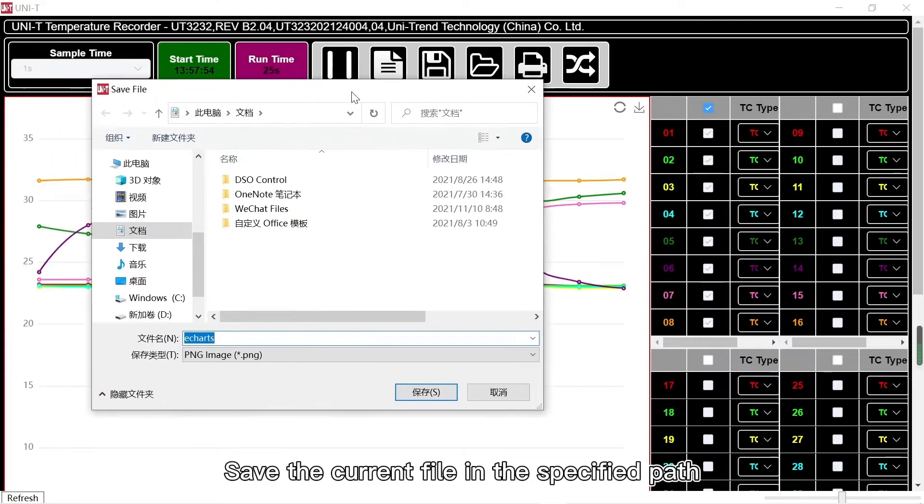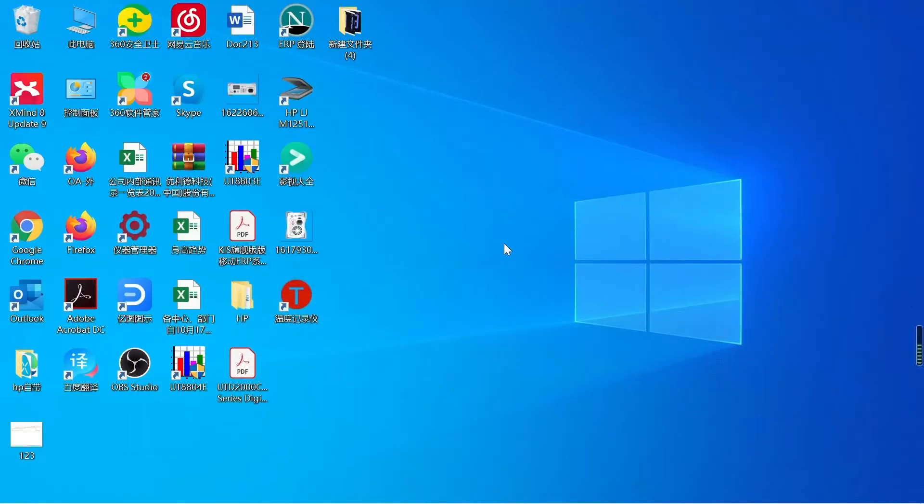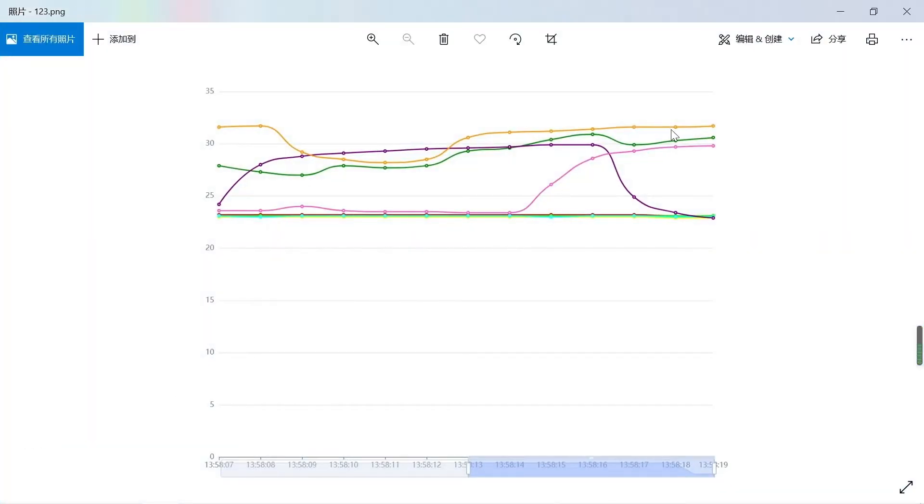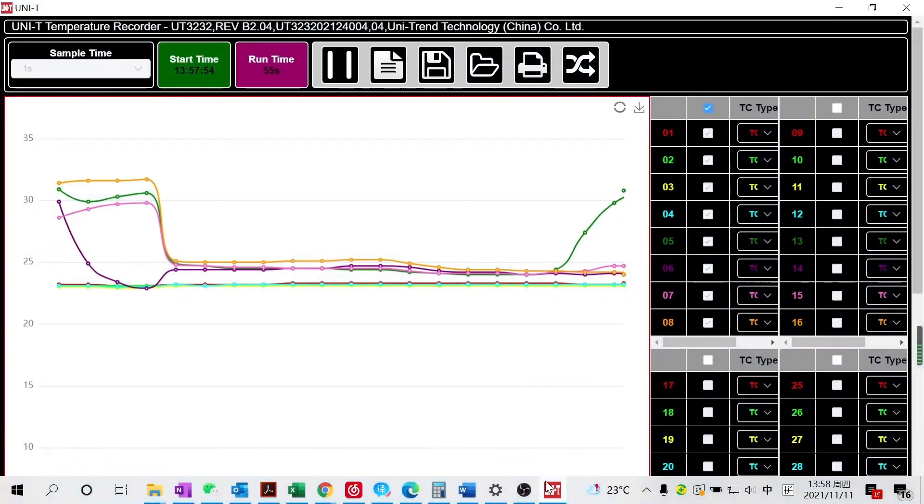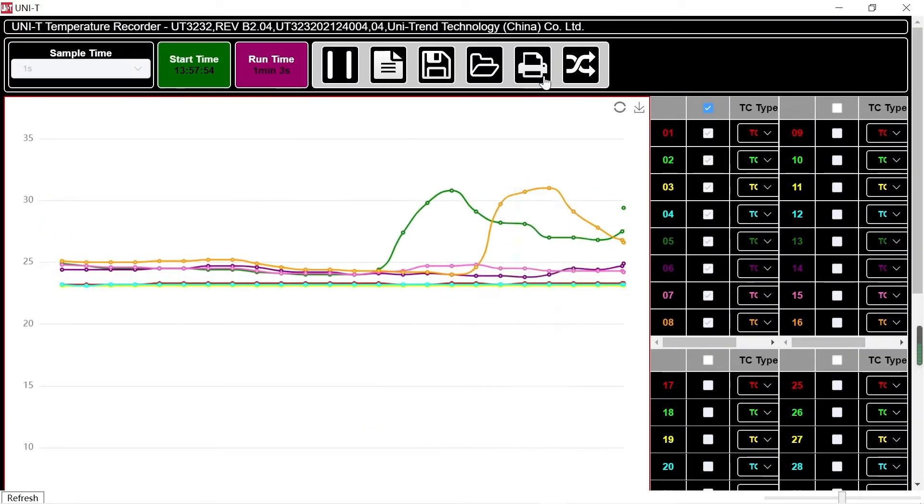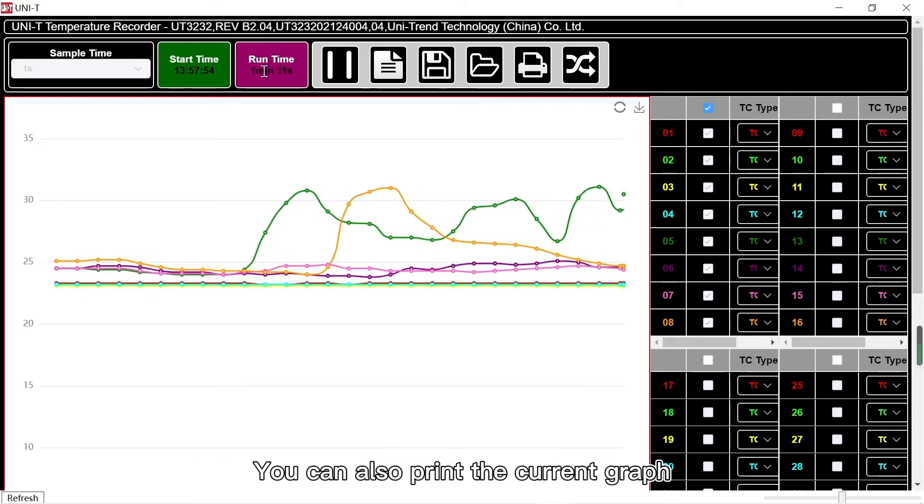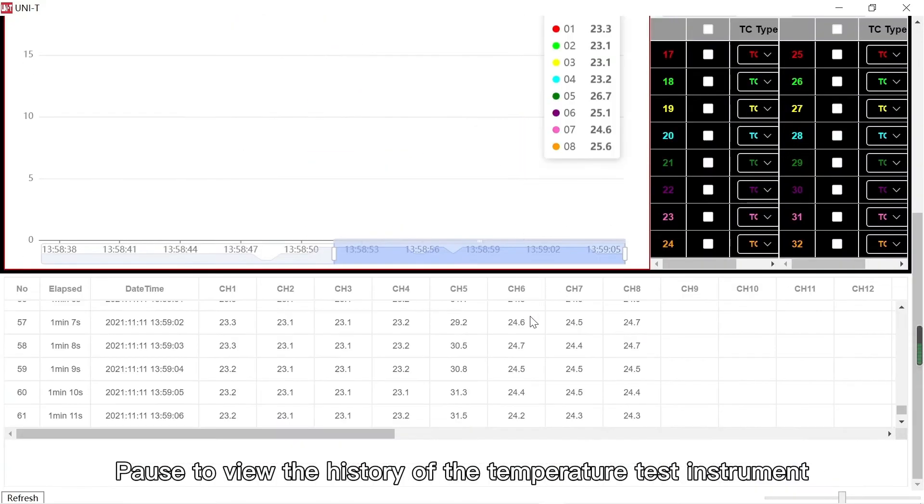Save the current file in the specified path. You can also print the current graph. Pause to view the history of the temperature test instrument.